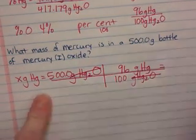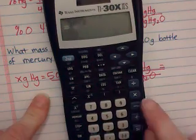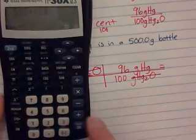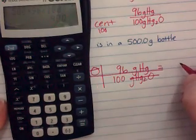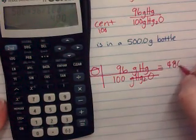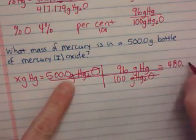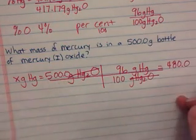I need to multiply and then divide. 500 times 96 divided by 100, and we get 480. We had 4 significant figures, so I have to put a .0 on there. Grams of mercury.